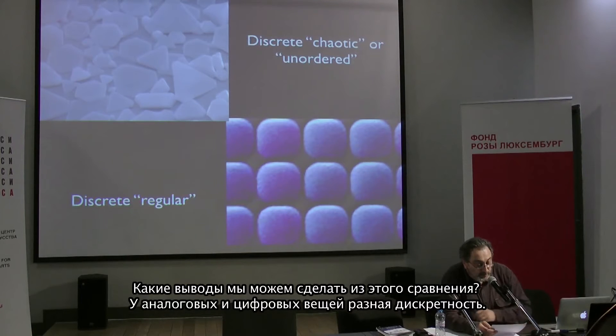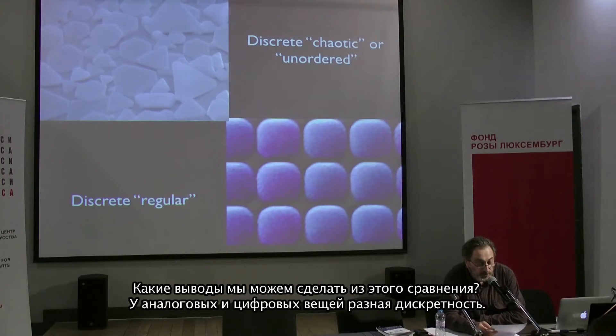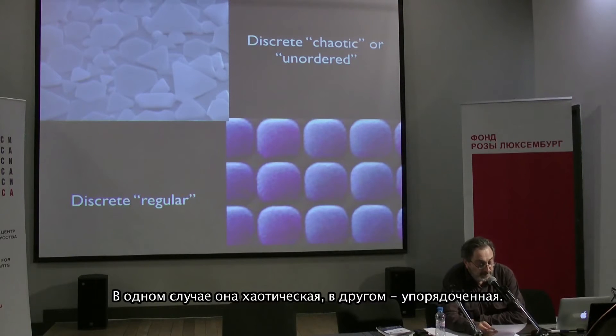What emerges from the comparison between analog and digital photographs can be extended to a more general purpose. Both analog and digital are discontinuous, discrete. The difference is that digital is discrete and regular, while analog is discrete and chaotic or unordered. The digital is widely used to build simulations of reality, and sometimes even as a metaphor of the world. It is essential to remember that the models made through the digital are just models — representations — that is, reductions of reality according to traits considered relevant, distinctive, and significant by a culture.